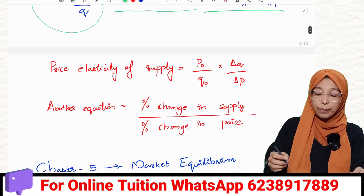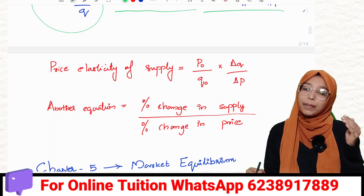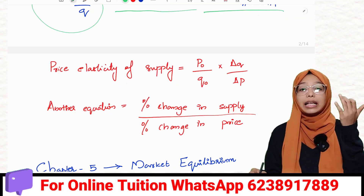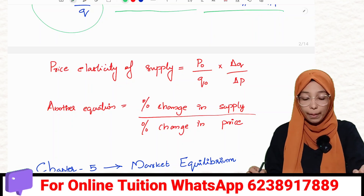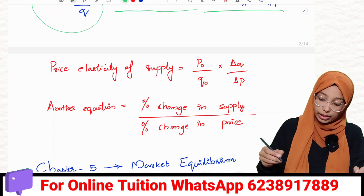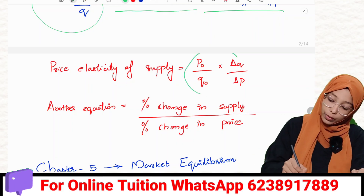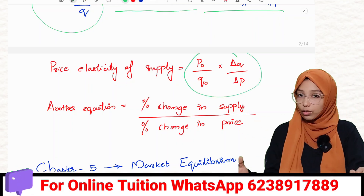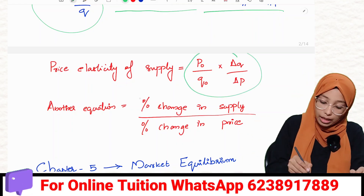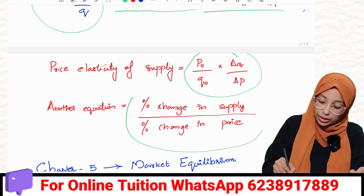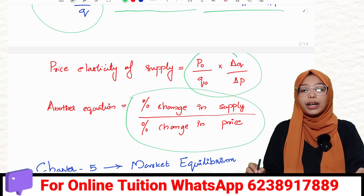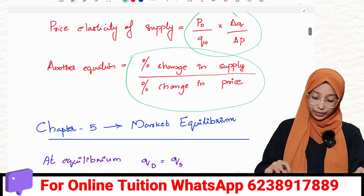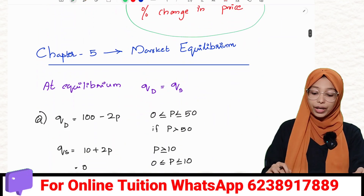You have supply, price elasticity of demand, and price elasticity of supply. The elasticity equation is P0 by Q0 into ΔQ by ΔP. Another equation is Percentage Change in Supply divided by Percentage Change in Price. Chapter 5.